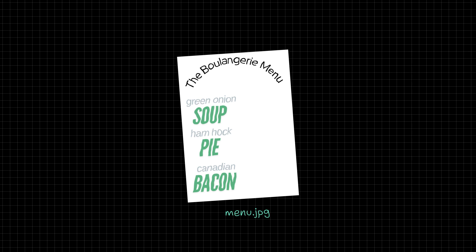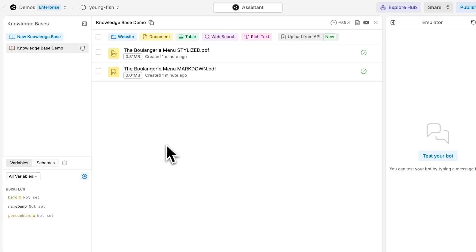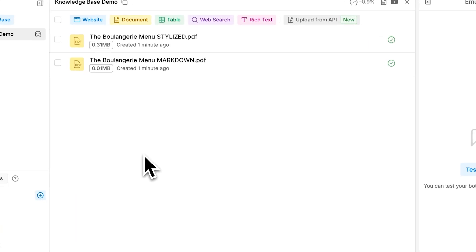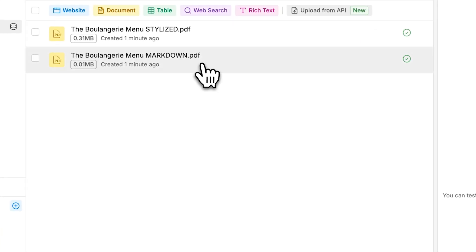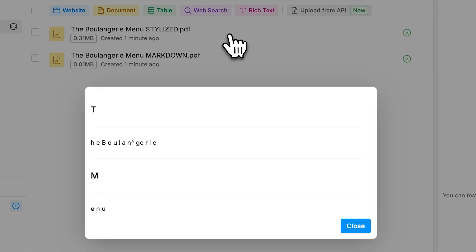Let's take this stylized restaurant menu as an example. Before converting it to a plain text file, the information that the LLM has to work with after parsing looks like this.